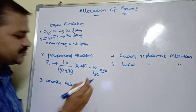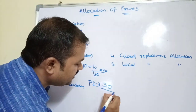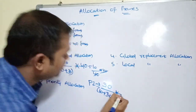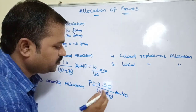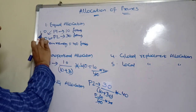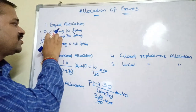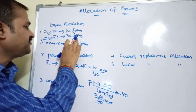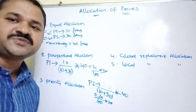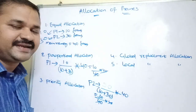Similarly, P2's allocation is calculated as: (30 / (10 + 30)) × 40 = 30 frames. So P2 gets exactly 30 frames. This is the major advantage of proportional allocation — no frames are wasted. P1 requires 10 and gets 10; P2 requires 30 and gets 30.